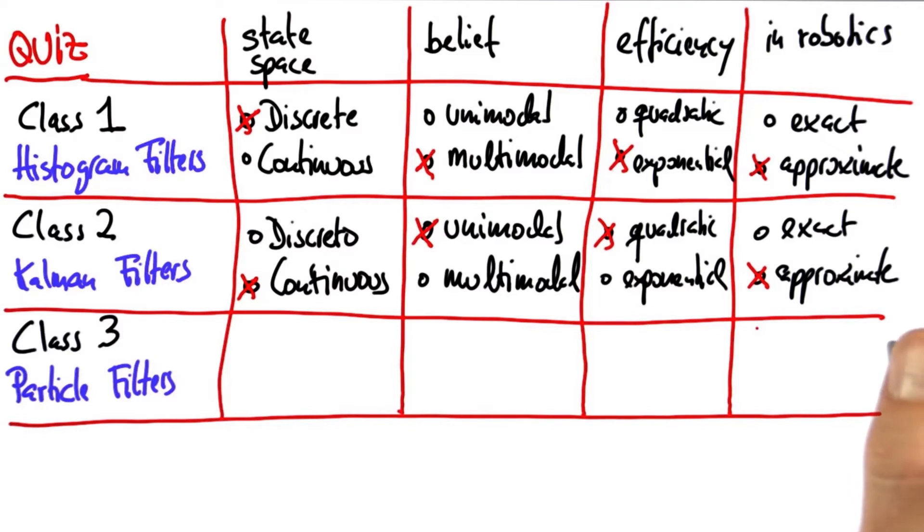Now this goes into a lot of deep math, which I don't want to get into here, but you should understand that both of these filters are not exact. Both of them tend to be just approximations of the correct posterior distribution.